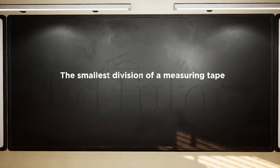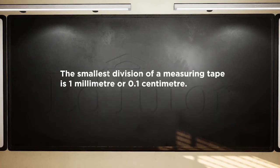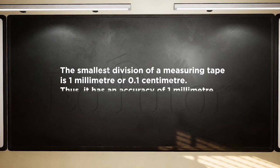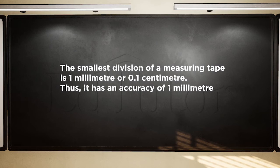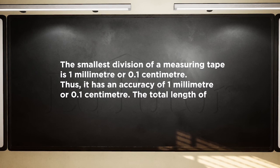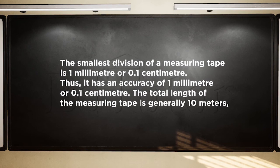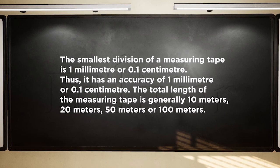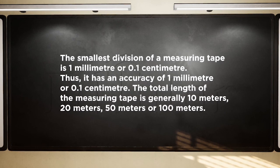The smallest division of a measuring tape is 1 millimeter or 0.1 centimeter. Thus, it has an accuracy of 1 millimeter or 0.1 centimeter. The total length of the measuring tape is generally 10 meters, 20 meters, 50 meters, or 100 meters.